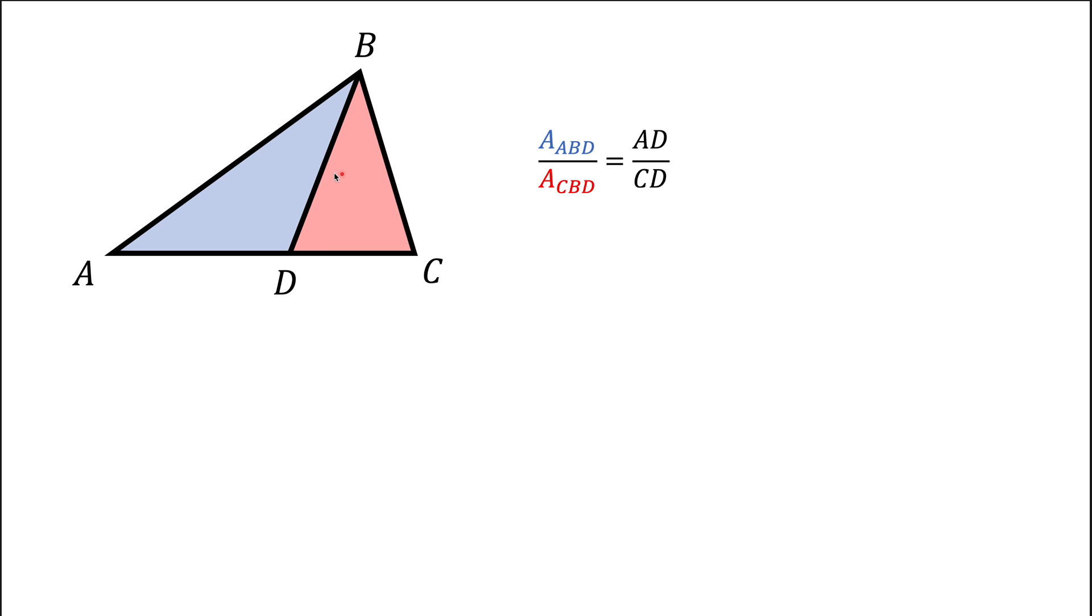Notice that both of those two triangles have the same vertex B. So we're going to drop an altitude BE from that vertex and that's going to be the altitude or height for both of those triangles.